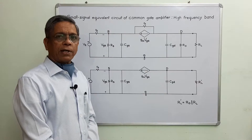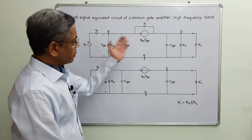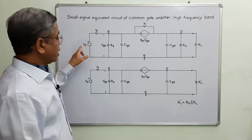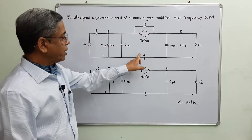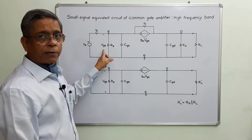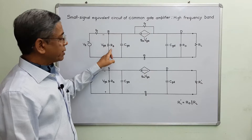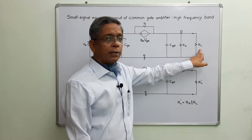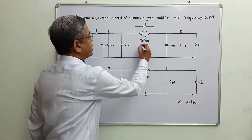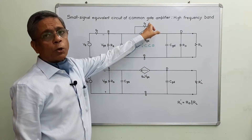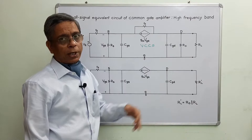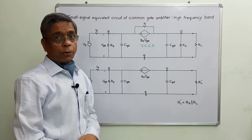This is the small signal equivalent circuit for common gate amplifier working at high frequency band. The gate is common between input and output terminals. VGS is the potential difference between gate and source. Rd is the resistor connected with the drain, RL is the load resistor, and GM·VGS is the voltage controlled current source. R0 is the output resistance of the device, and CGS and CGD are two internal capacitors which don't behave as open circuits at high frequency.